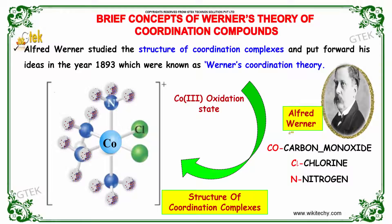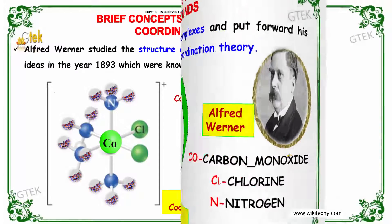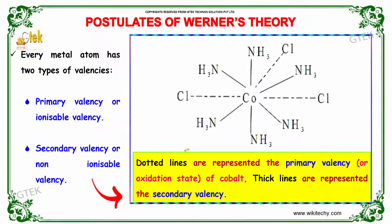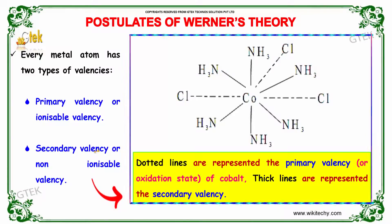Alfred Werner studied the structure of coordination compounds and complexes, and put forward his ideas in the year 1893, which became known as Werner's coordination theory. According to this theory, every metal atom has two types of valencies: a primary valency or ionizable valency, and a secondary valency or non-ionizable valency.